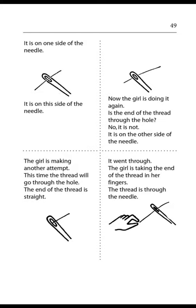Now the girl is doing it again. Is the end of the thread through the hole? No, it is not. It is on the other side of the needle. The girl is making another attempt. This time the thread will go through the hole. The end of the thread is straight. It went through. The girl is taking the end of the thread in her fingers. The thread is through the needle.